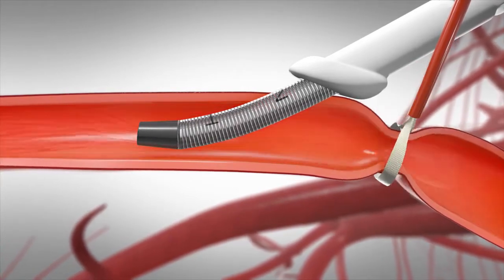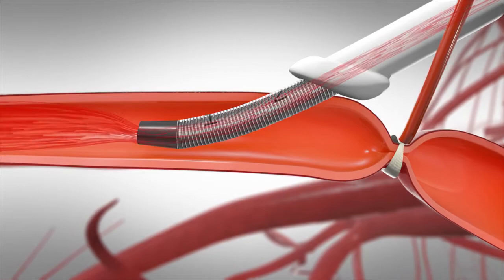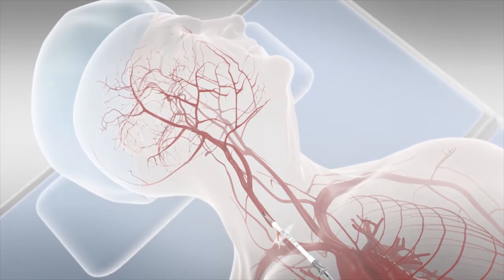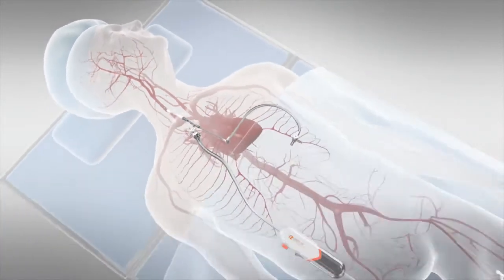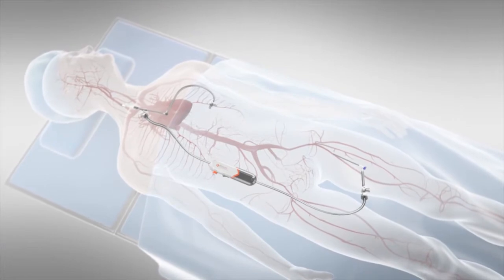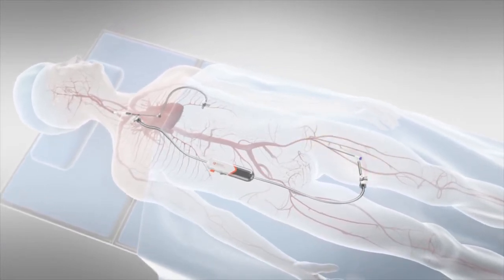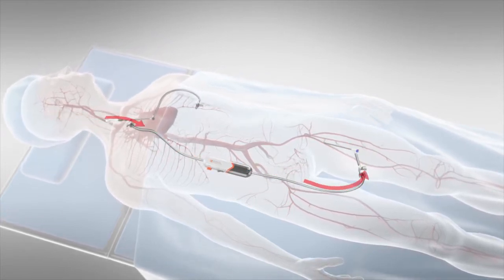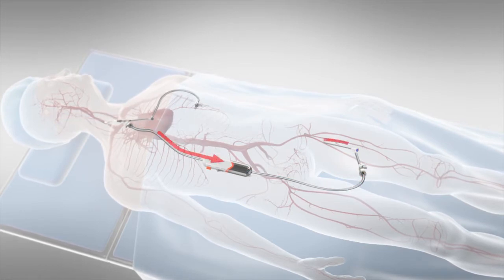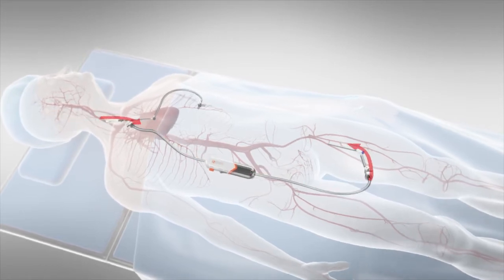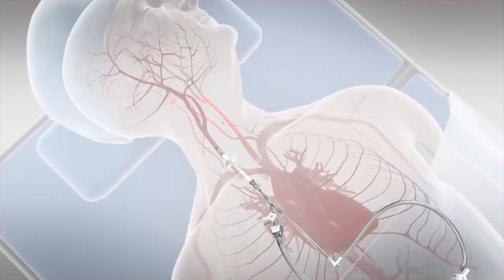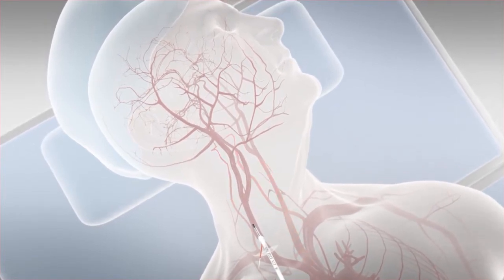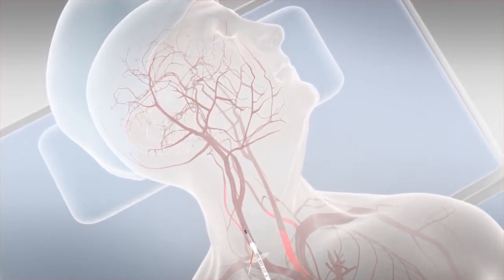But first, the sheath will temporarily reverse blood flow in the artery. Flow reversal keeps debris moving away from the brain, protecting it from dangerous emboli. The sheath is connected to a circuit outside the body that directs the blood flow into the femoral vein. The connection between the high-pressure arterial system in the brain and the low-pressure vein in the leg creates a pressure gradient, causing blood to move backwards in the carotid artery.